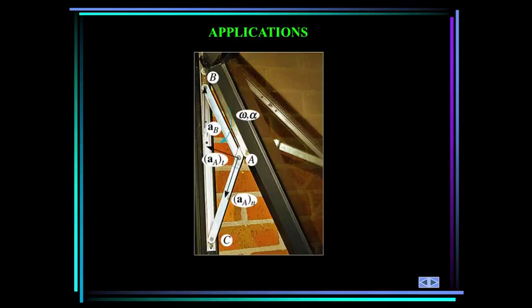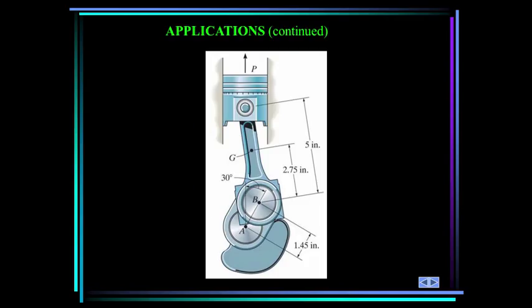In this mechanism for a window, link AC rotates about a fixed point C, and AB undergoes general planar motion. Point A is moving in a circle about C, and point B is sliding in the track, so the link AB undergoes translation and rotation. How can we determine the accelerations of the links in the mechanism? In an automotive engine, the forces delivered to the crankshaft and the angular acceleration of the crankshaft depend on the speed and acceleration of the piston. How can we relate the accelerations of the piston, connection rod, and crankshaft to each other?